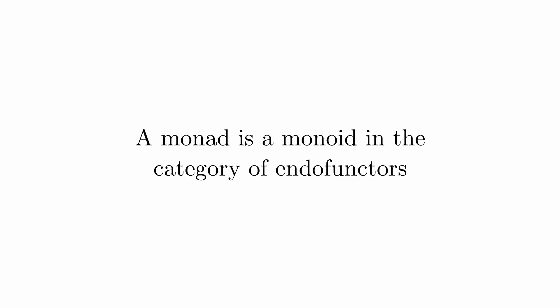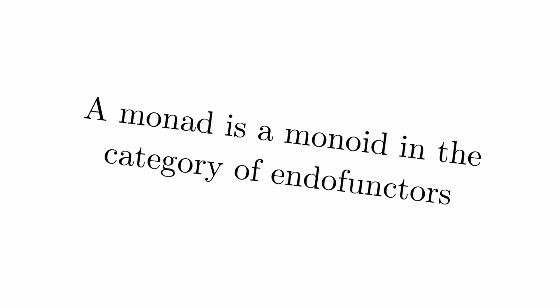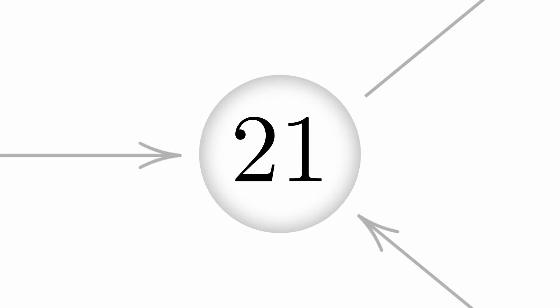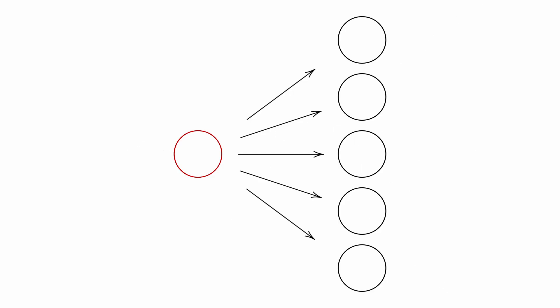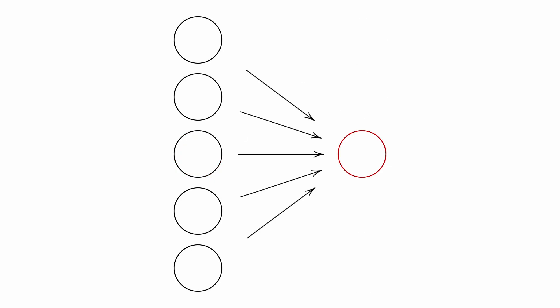Fact 20: A monad is a monoid in the category of endofunctors. Nobody actually knows what that means, so they'll just parrot 'a monad is a monoid in the category of endofunctors' at you repeatedly to make themselves look smart. Fact 21: Initial objects have morphisms to everything, and terminal objects have morphisms from everything.